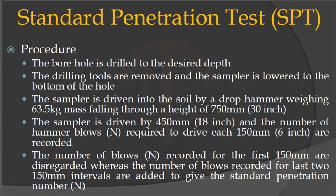In the procedure, firstly the borehole is drilled to the desired depth, then the drilling tools are removed and the sampler is lowered to the bottom of the hole. The sampler is driven into the soil by a drop hammer of 63.5 kg mass falling through a height of 30 inches. The sampler is driven 18 inches and the number of hammer blows required to drive each six inches are recorded. Blows for the first six inches are disregarded, while blows for the last 12 inches (150 mm intervals) are added to give the Standard Penetration Number N.